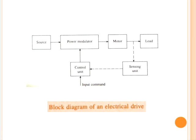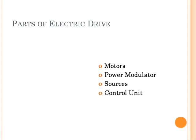In the past, induction and synchronous motors were employed mainly in constant-speed drives; variable-speed drives consisting of these machines were either too expensive or had very poor efficiency. Consequently variable-speed drive applications were dominated by DC drives. AC motors are now used in variable-speed drives due to the development of semiconductor converters employing thyristors, power transistors, IGBTs, and GTOs.